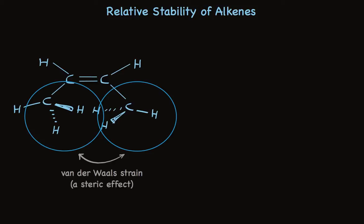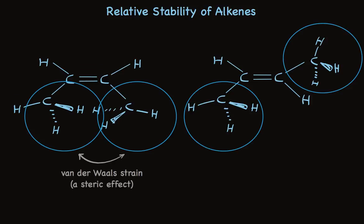Now take a look at the trans-2-butene. I'll put the circles around those methyl groups. And it's crystal clear there's no van der Waals strain. It's easy to understand that trans is more stable than cis and why. It's a steric thing. Crowding in the cis, no crowding in the trans.